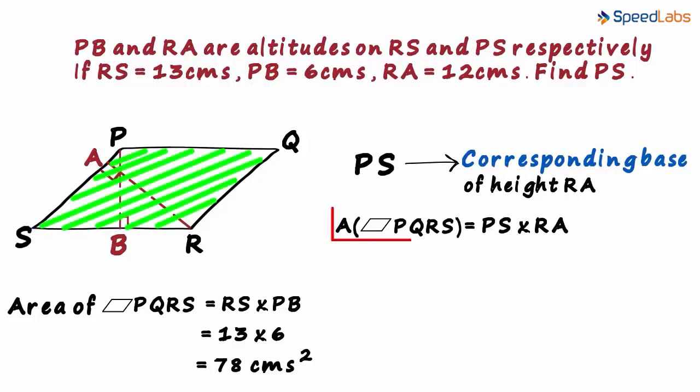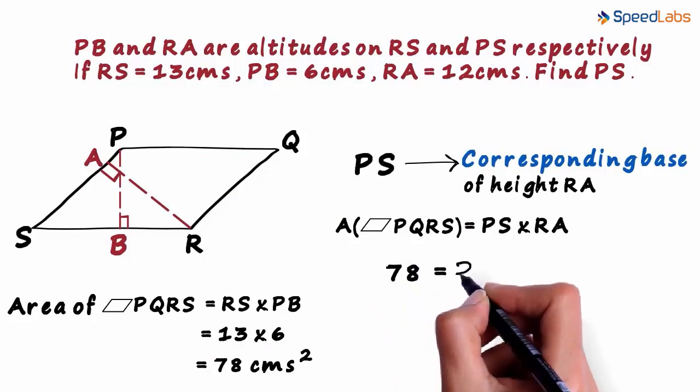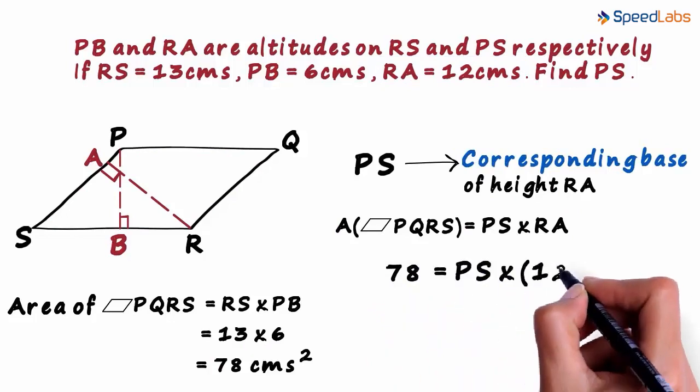We know the area of this quadrilateral. It is 78 squared centimeters. We also know the value of RA. It is 12 centimeters. So we can write this as 78 equals PS multiplied by 12.